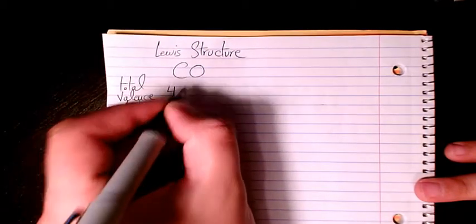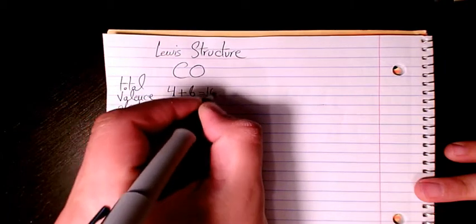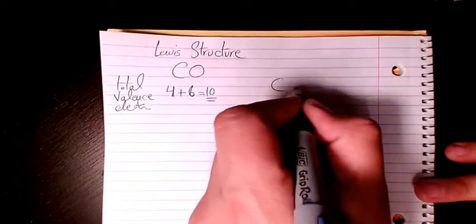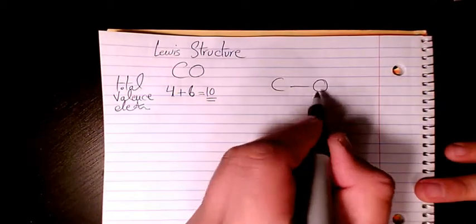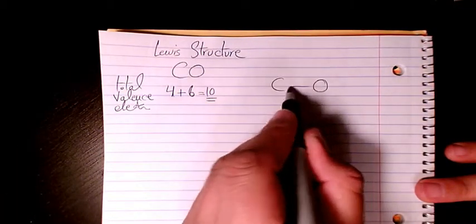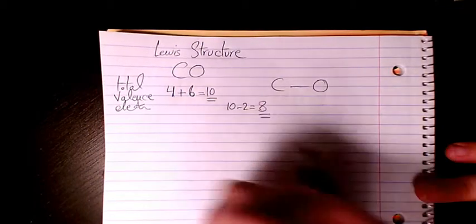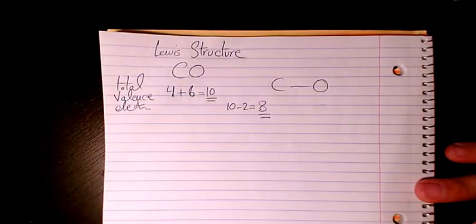Four for carbon, six for oxygen, so it's going to be 10 valence electrons. Then I have a single bond here, so we have one bond, so two electrons. 10 minus two equals eight, so we have eight remaining electrons.